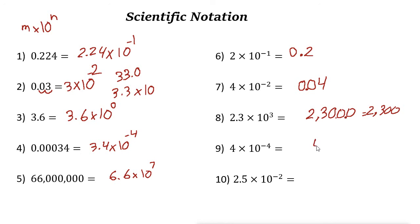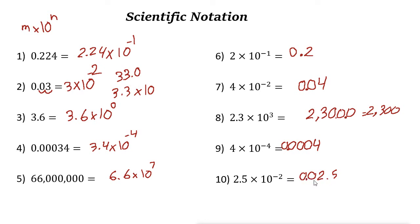For 4 times 10 to the power of negative 4: the power is negative, so we need zeros before 4. The decimal point moves 1, 2, 3, 4 places to the left, giving 0.0004. For 2.5 times 10 to the power of negative 2: the power is negative, so write zeros before 2.5 and move the decimal 2 places left — 1, 2 — giving 0.025.